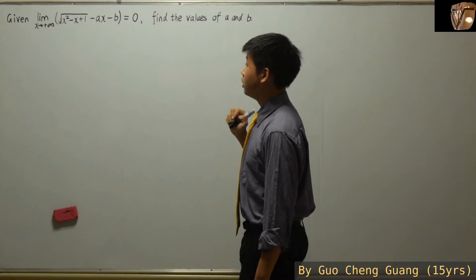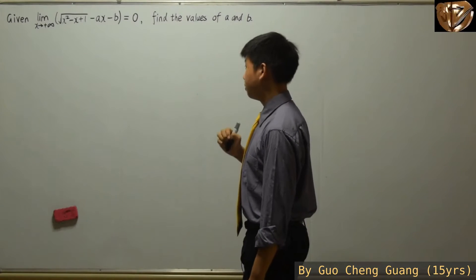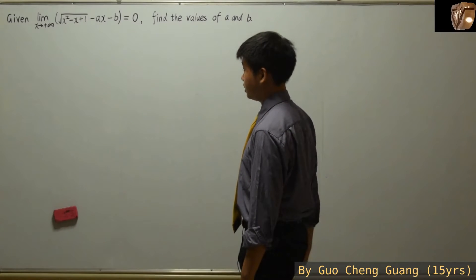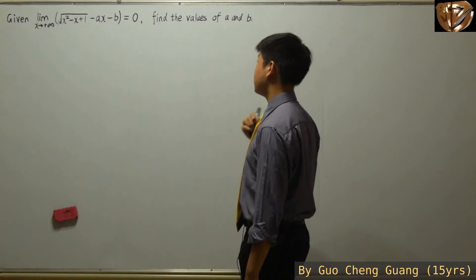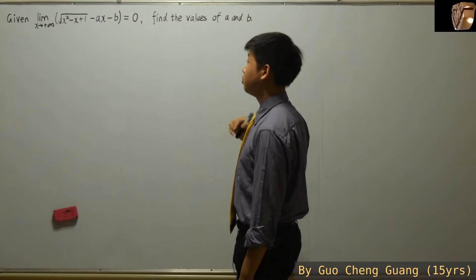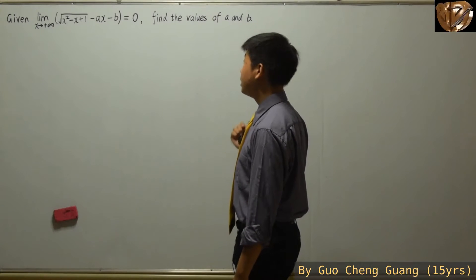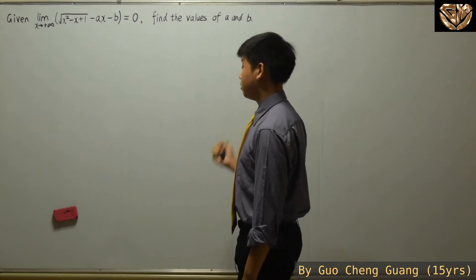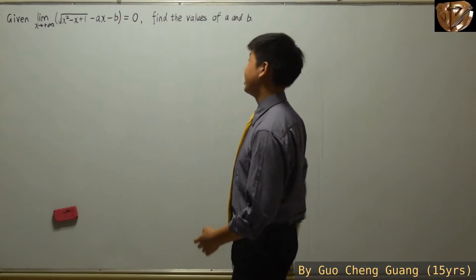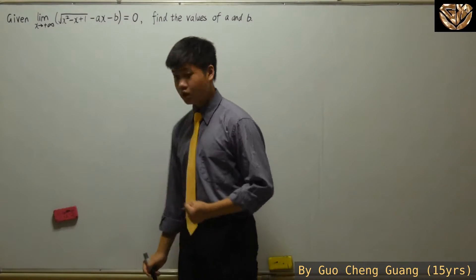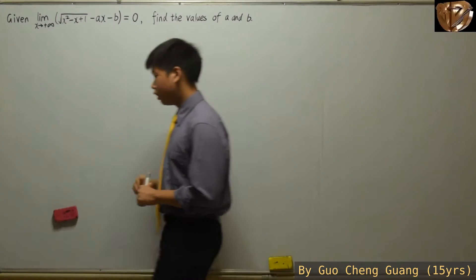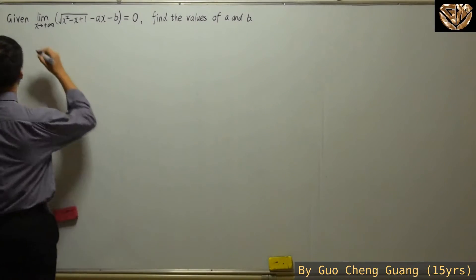One thing we can immediately determine from this example: the indeterminate form is infinity minus infinity. For this infinity minus infinity form, you realize that a has to be some kind of positive value in order to have infinity minus infinity. Otherwise, it becomes infinity plus infinity, which does not give the value of 0. So in this example, we will be separating into three different methods. Let's take a look at method one.